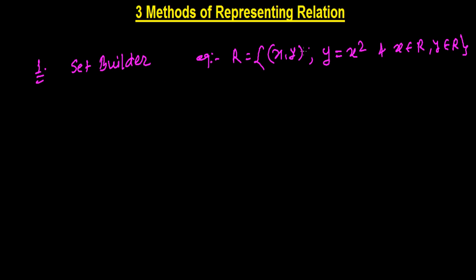And now the second method is arrow diagram method - sometimes we call it balloon method also. Let's say we have two sets, say P and say Q.